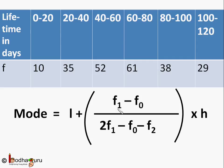Here is the formula to find the mode of grouped data: Mode = L + [(F1 - F0) / (2F1 - F0 - F2)] × H.